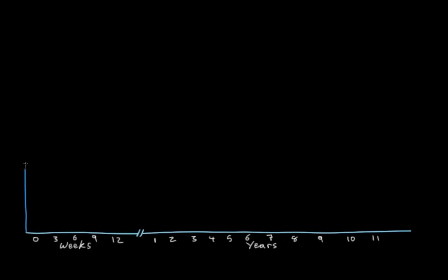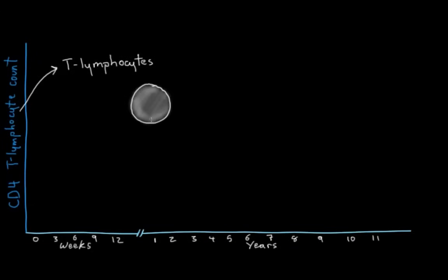On the y-axis here, we'll put CD4 T lymphocyte count. T lymphocytes are a really important type of immune system cell, and CD4 just refers to a type of protein that's stuck through their cell membranes. The reason they get a special spot on an entire axis of our graph is because they're super important in the progression from HIV infection to AIDS.